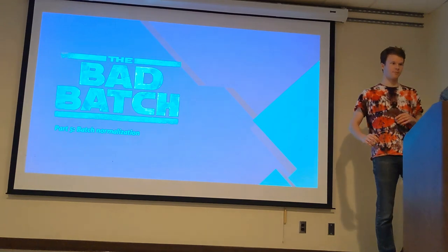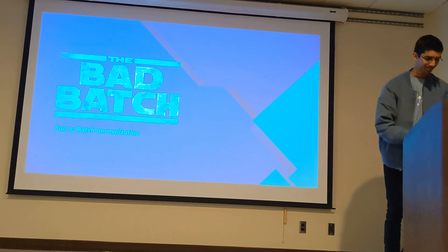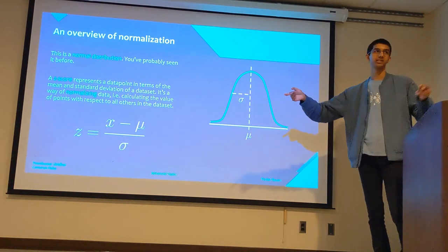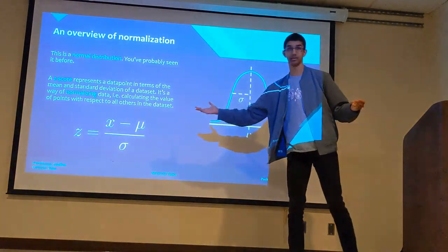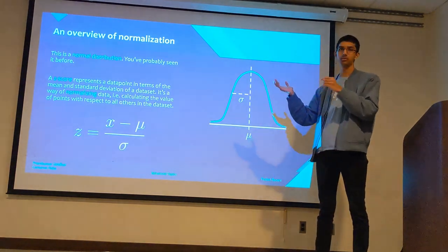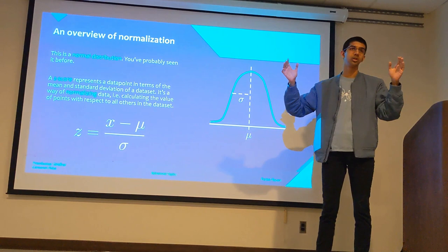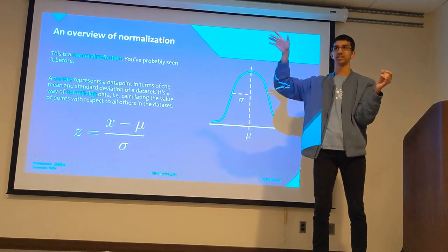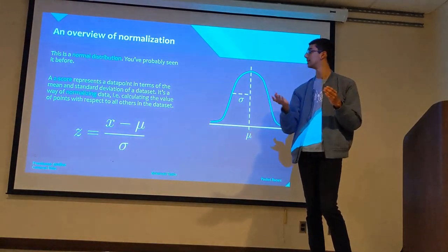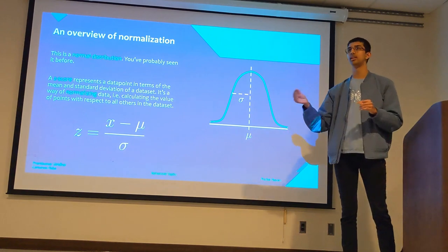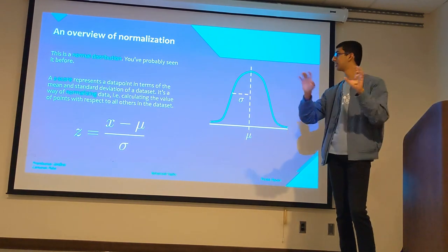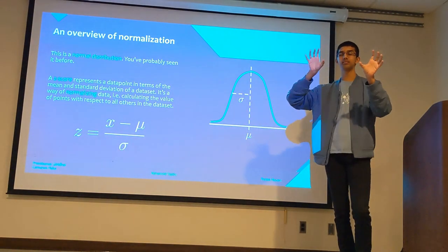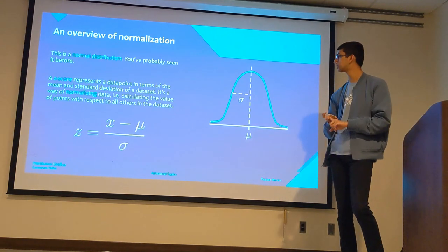Now we're going to talk about batch normalization, which will help with many things. We've all seen the normal distribution — the bell curve — and the z-score formula, which represents your data point in terms of the mean and standard deviation of your set. This normalizes the data by plotting it relative to all the other points in the dataset. You can take two distributions from vastly different scales and compare them by converting to z-scores first.